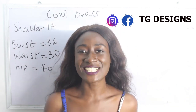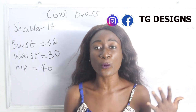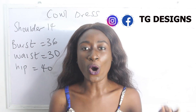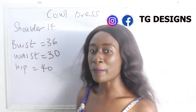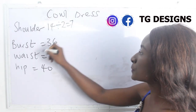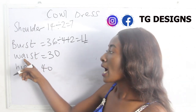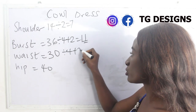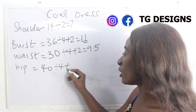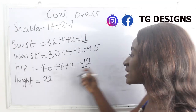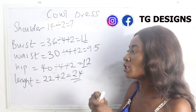The measurements are: shoulder, bust, waist, and hip. Our shoulder measurement is 14 — 14 divided by 2 gives us 7. Our bust is 36 — 36 divided by 4 plus 2 gives us 9.5. Our hip is 14 — 14 divided by 4 plus 2 gives us 12 inches. Our length is 22 inches, and we add 2 inches for sewing allowance, giving us 24 inches.